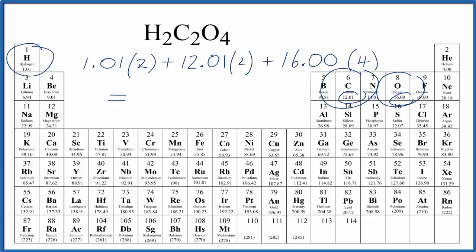So we'll multiply 1.01 times 2, then 12.01 times 2, 16.00 times 4, and then we'll add those numbers all up. When we do that, we end up with a molar mass of 90.04. And now we can write the units in here, grams per mole.